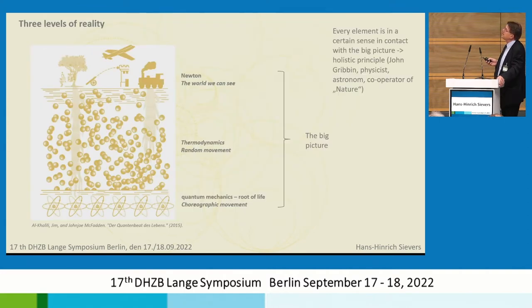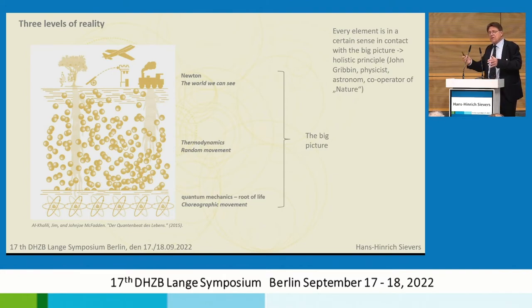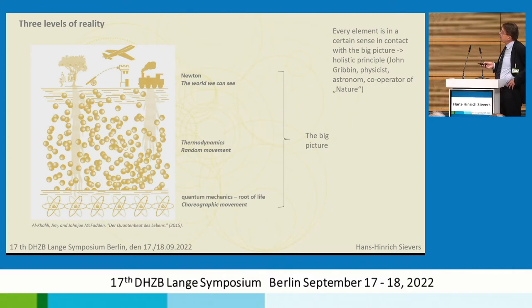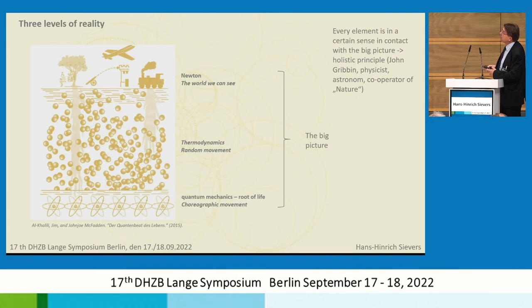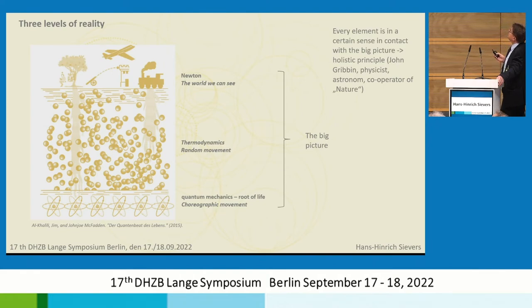Here is a picture of three levels of reality. This is the reality where we live — this is the Newtonian world that we can see: steam, airplanes, and so on. The next step is thermodynamics: there is random movement of the particles. If you boil water, there is random movement and that makes steam. But at the bottom here is quantum mechanics — there is the root of life, there is choreographic, very fine-tuned movement. And you can see that the connection to life goes down to this area. Some say that if you cut this connection, life doesn't go on. But together, this is the big picture. And Gribbin, a physicist and astronomer, once said: every element is in a certain sense in contact with the big picture — this is the holistic principle of the world.